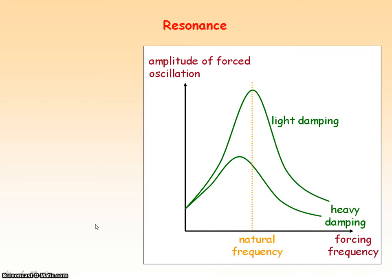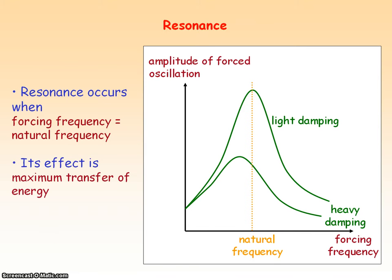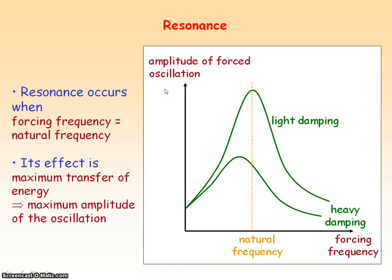Resonance is a special case of a forced oscillation. It occurs when the forcing frequency of the driver — the externally applied force — equals the natural frequency of what is being forced, the driven. The result is maximum transfer of energy from the driver to the driven, and the amplitude of the forced oscillation is at its maximum when the forcing frequency equals the natural frequency.